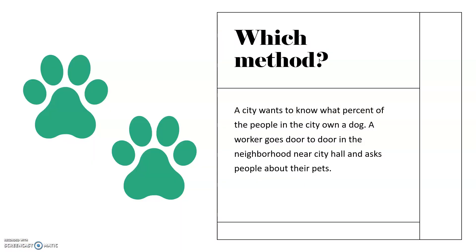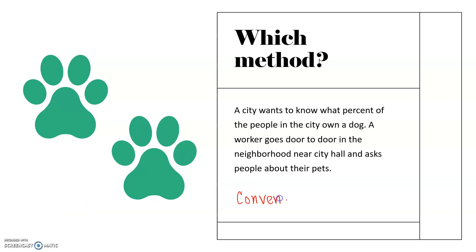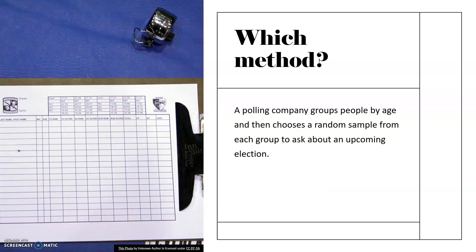A city wants to know what percent of the people in the city own a dog. A worker goes door to door in the neighborhood near city hall and asks people about their pets. They were only talking to people who were convenient, so this is convenience sampling — though there could be bias because there might be more or fewer pets in the neighborhood near city hall. A polling company groups people by age and then chooses a random sample from each group to ask about an upcoming election. Because they're grouping people and then choosing from each group, this is stratified sampling.